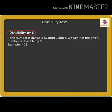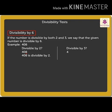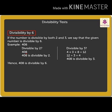For example, 408. First, we check divisibility by 2 — 408 is divisible by 2. Then we check divisibility by 3: adding the digits 4 plus 0 plus 8, we get 12, and 12 is divisible by 3. So 408 is also divisible by 3. Hence, 408 is divisible by 6.